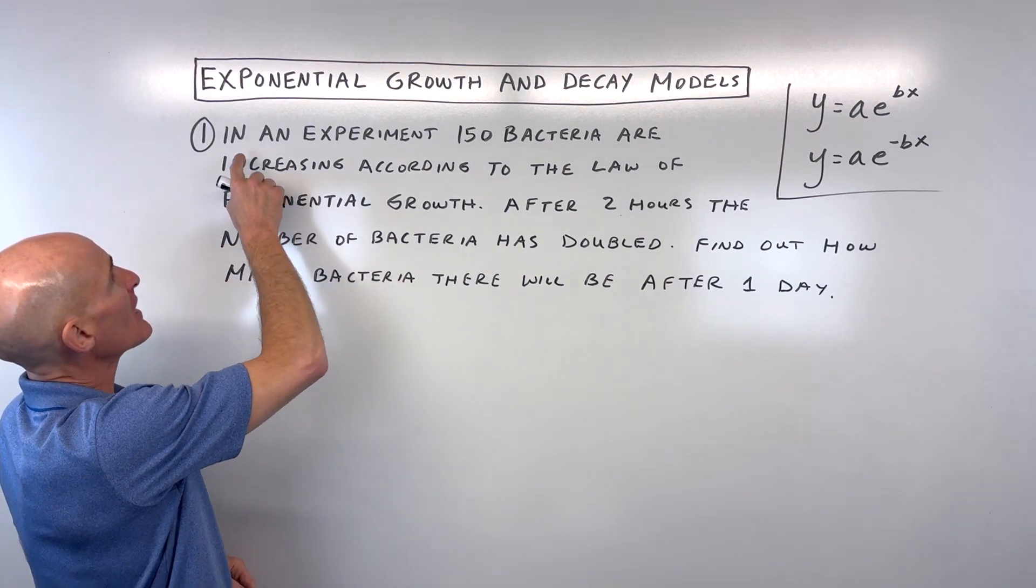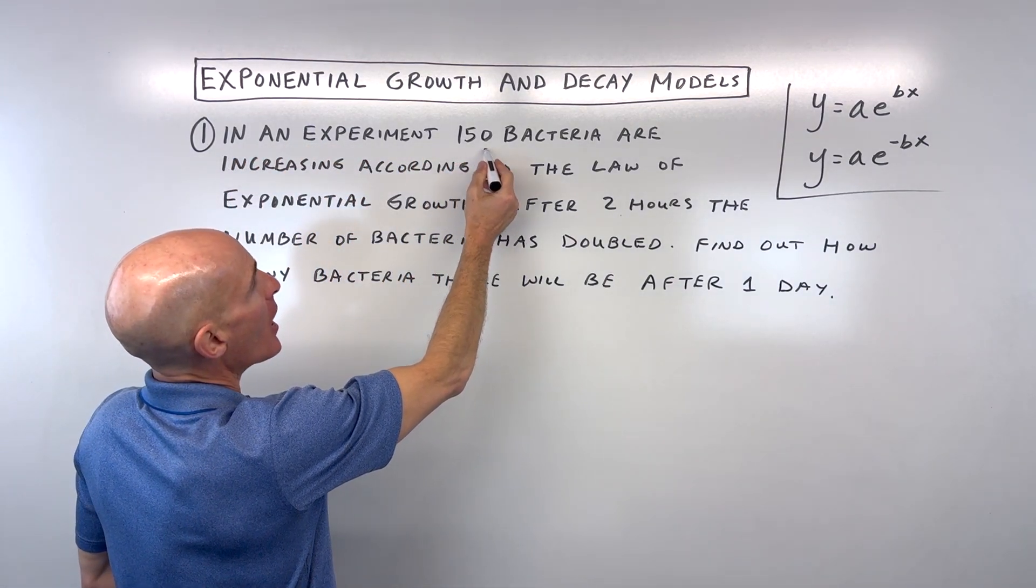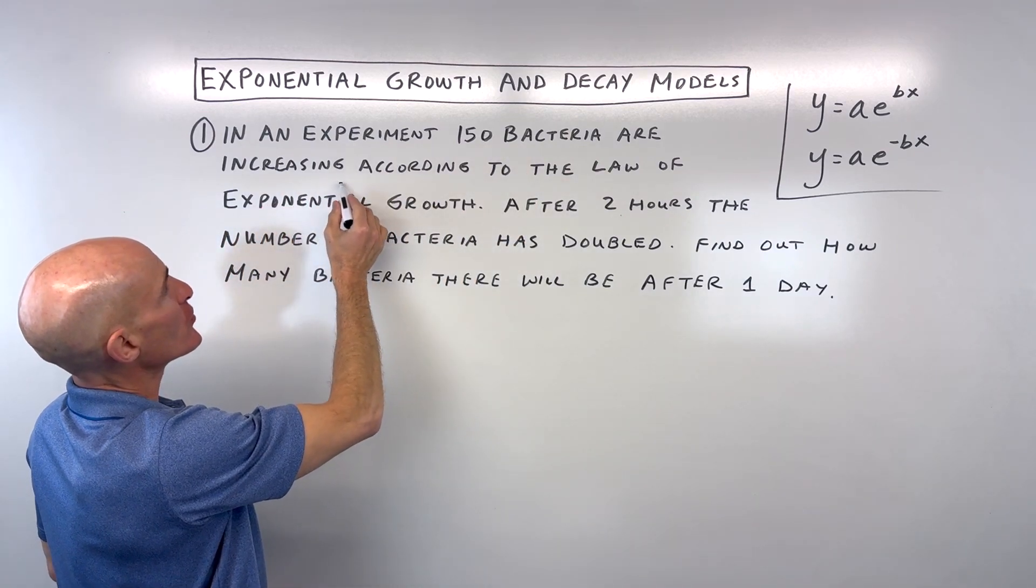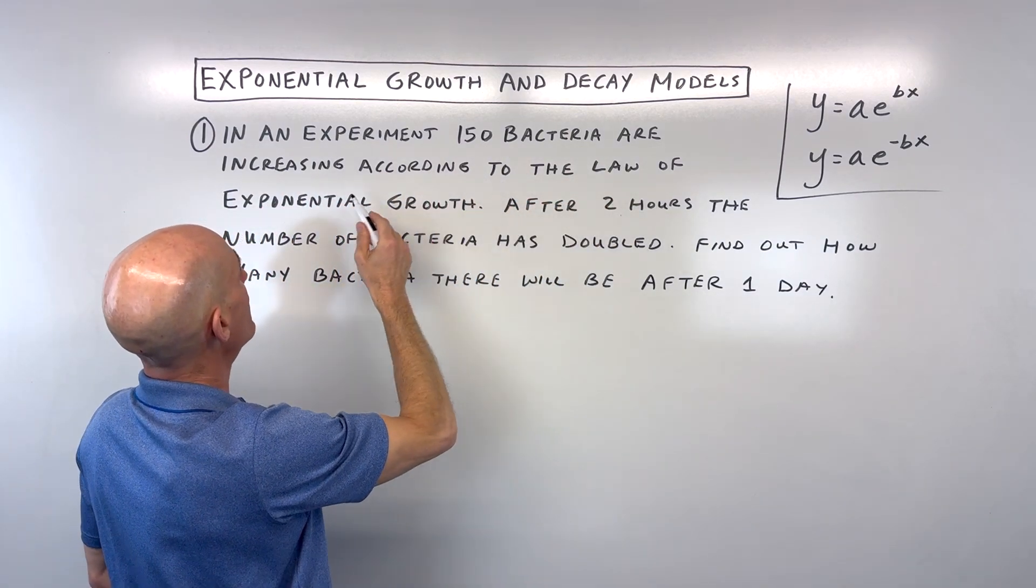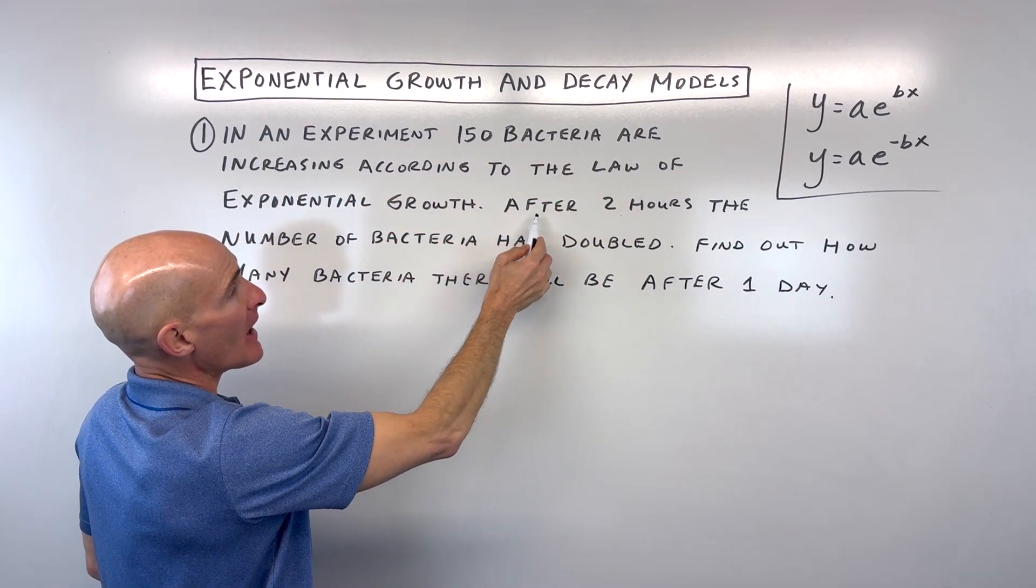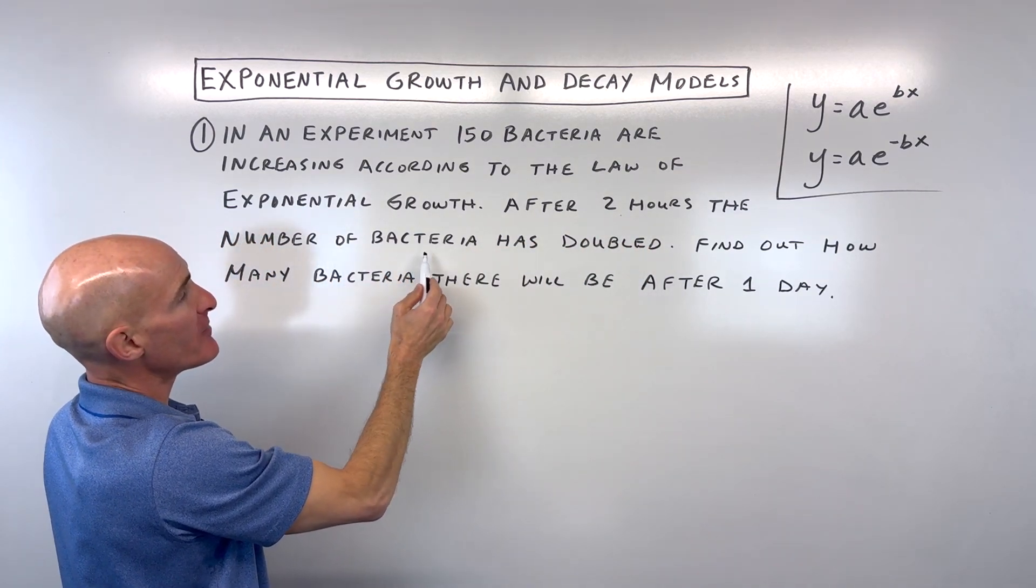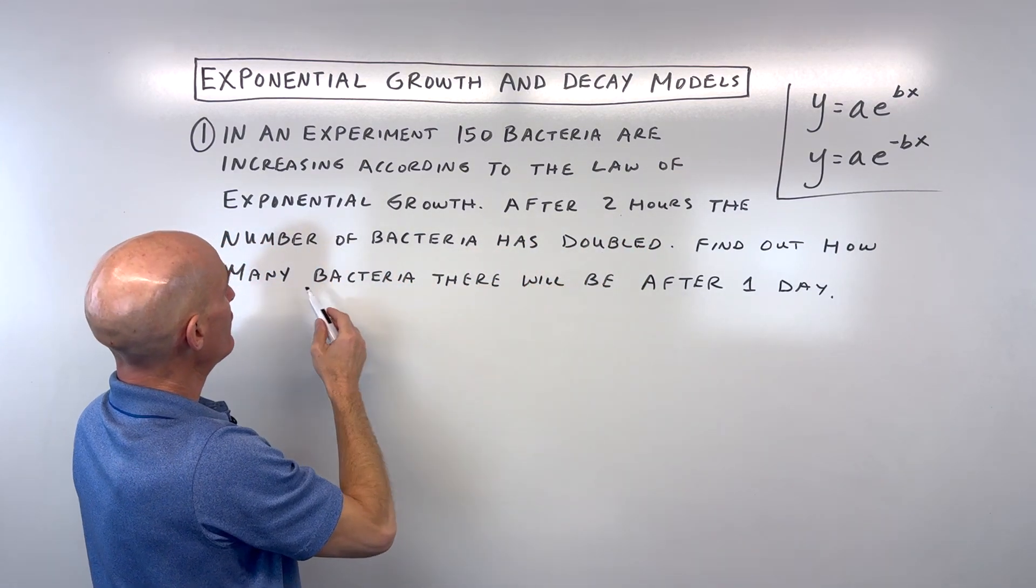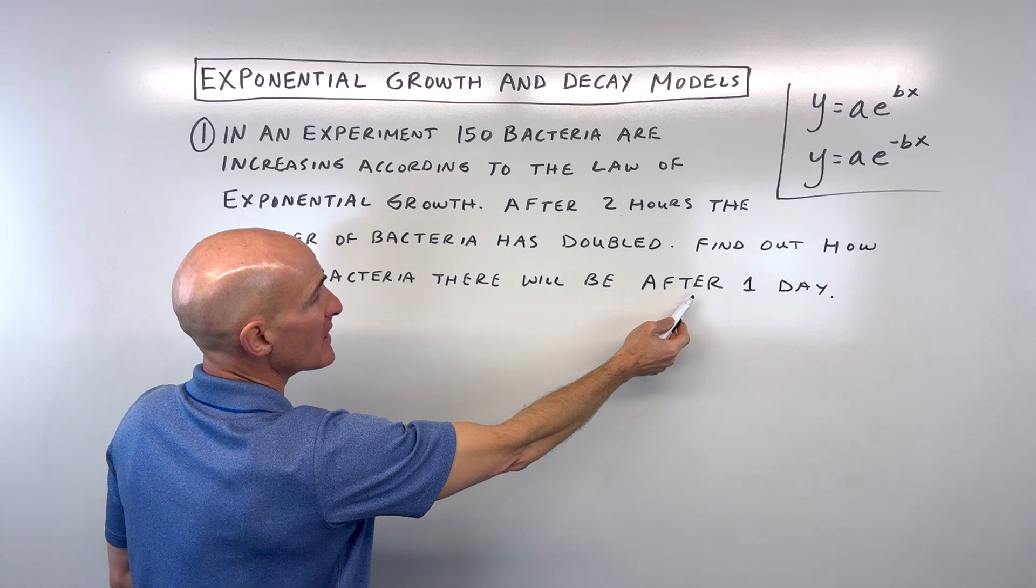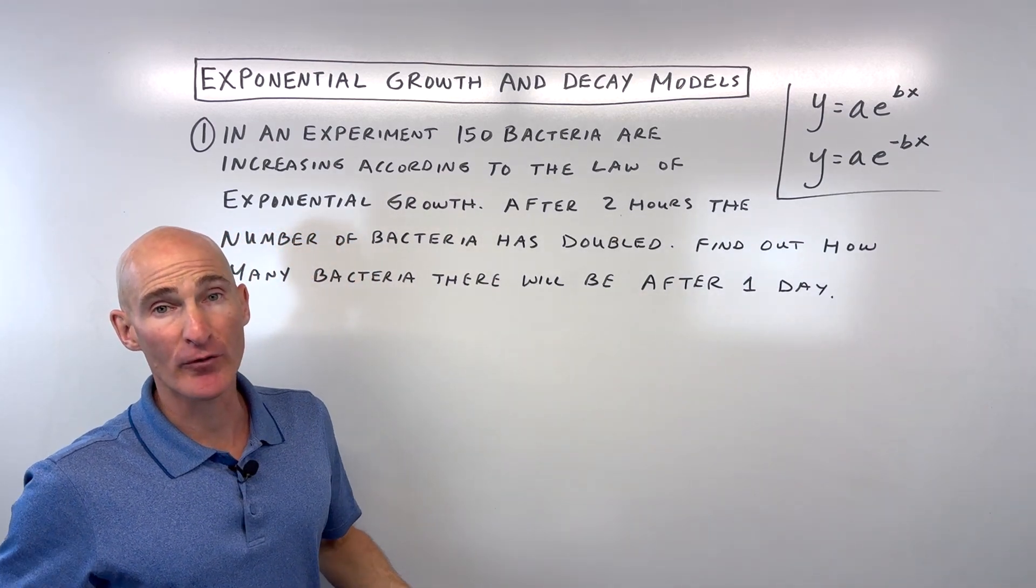So the first example says: in an experiment, 150 bacteria are increasing according to the law of exponential growth. If after two hours the number of bacteria has doubled, find out how many bacteria there will be after one day or 24 hours.